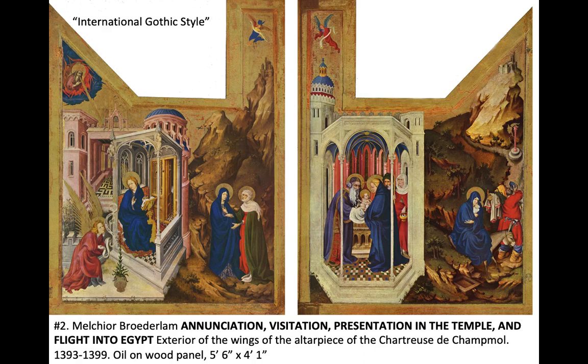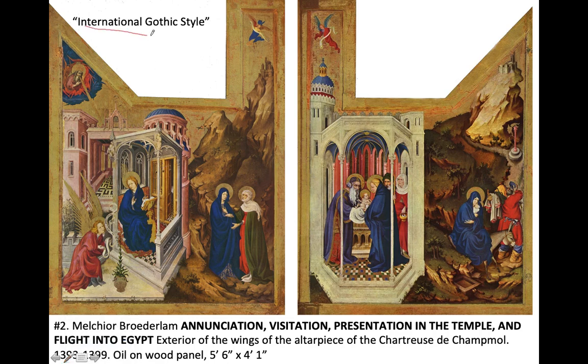This is the second slide in your packet — the Annunciation, Visitation, and Presentation in the Temple, as well as the Flight into Egypt, from the exterior wings of the altarpiece of the Chartreuse de Champmol. In the top left corner we have what's called the International Gothic style, which is a new composite style emerging in the late 14th century. It's characterized by slender, gracefully posed figures, delicate features, and complex headdresses. There are richly embroidered fabrics and elaborate jewelry.